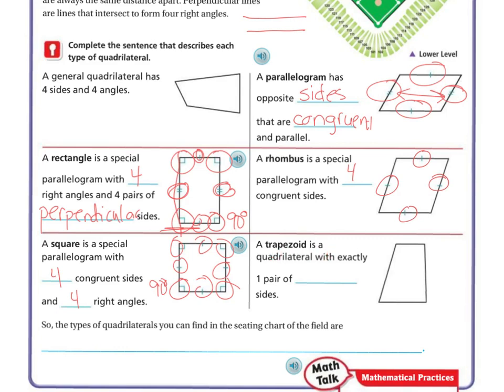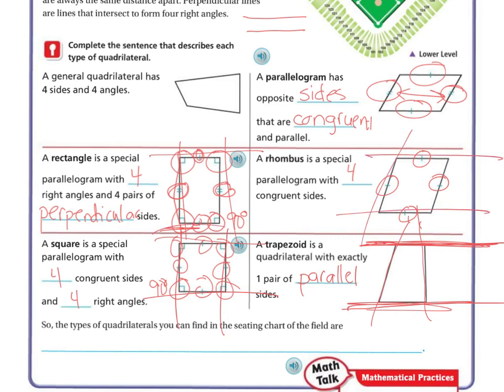And then a trapezoid is a quadrilateral with exactly one pair of parallel lines. So if you look, this line right here will always continue to go straight and never intersect. Now, these, on the other hand, eventually they're going to come up and they're going to intersect. So it has one parallel. Whereas these, see, two parallels, two parallels. Parallel, parallel. Same here. These are parallel and those are parallel. But a trapezoid only has one pair of parallel.